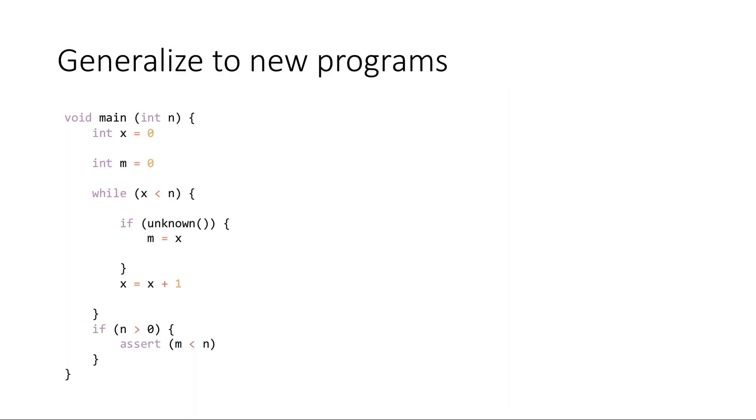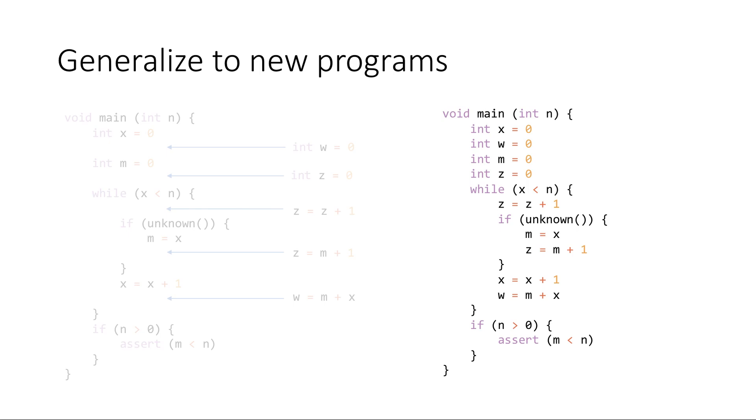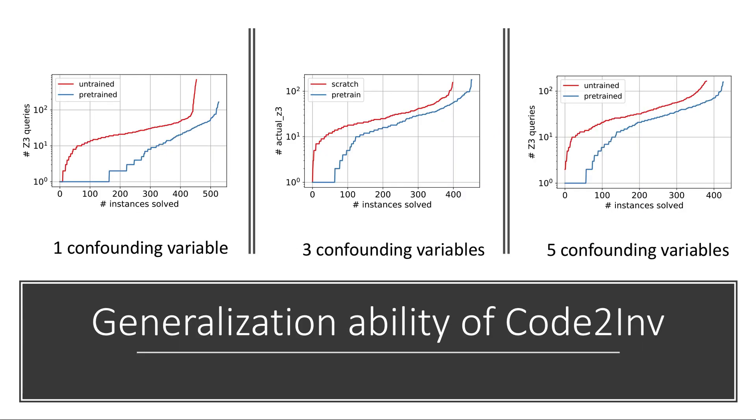To evaluate the generalization ability, we randomly mutate the program by adding confounding variables. In this limited setting, we can get programs with same underlying semantics.